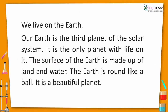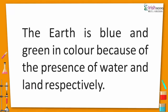We live on the Earth. Our Earth is the third planet of the solar system. It is the only planet with life on it. The surface of the Earth is made up of land and water. The Earth is round like a ball. It is a beautiful planet. The Earth is blue and green in color because of the presence of water and land respectively.